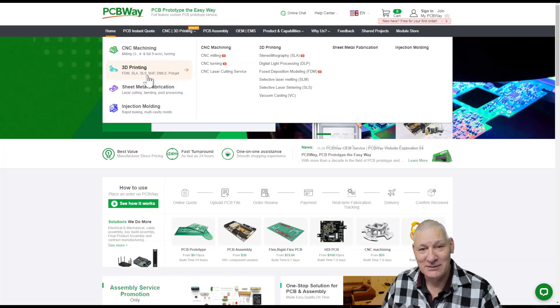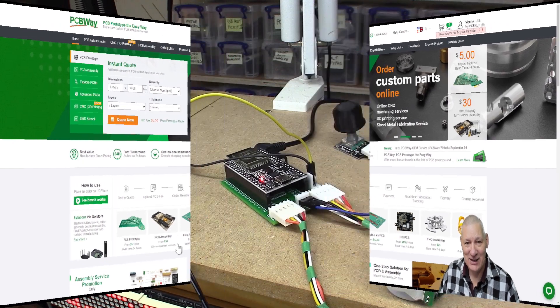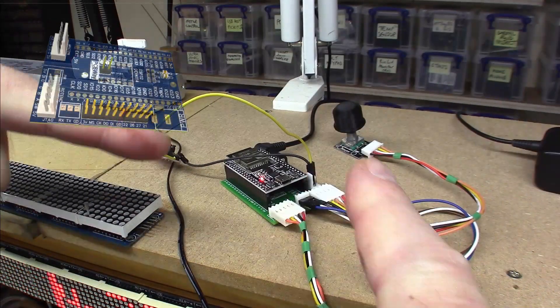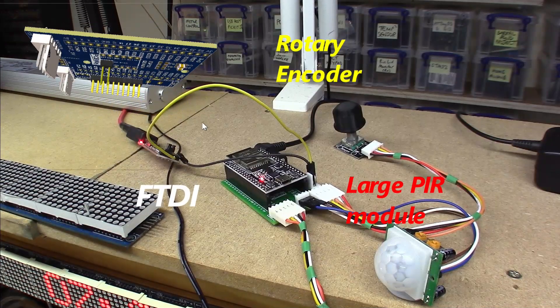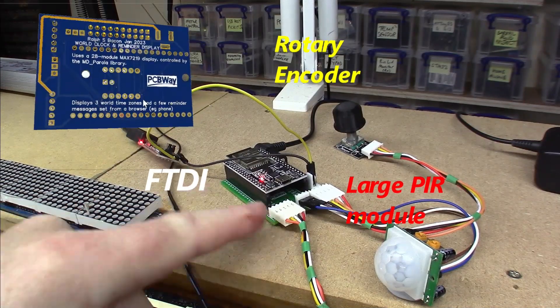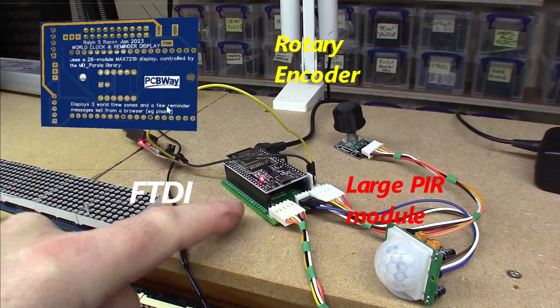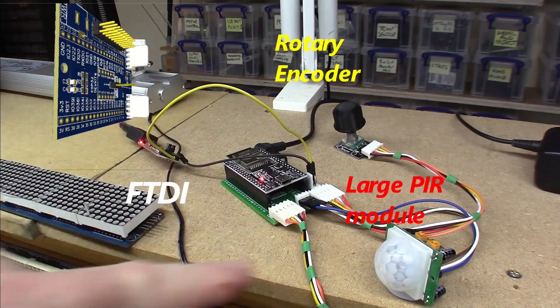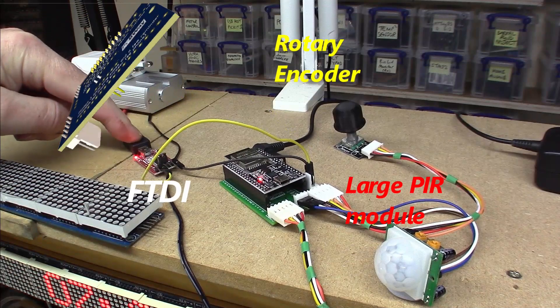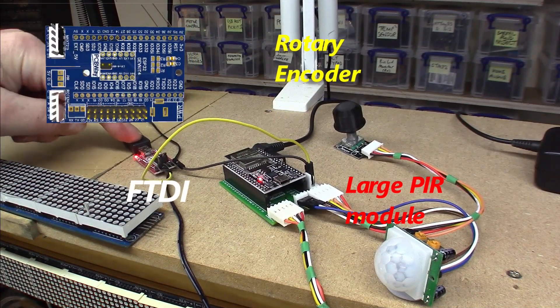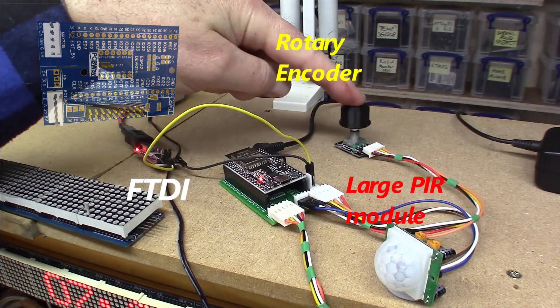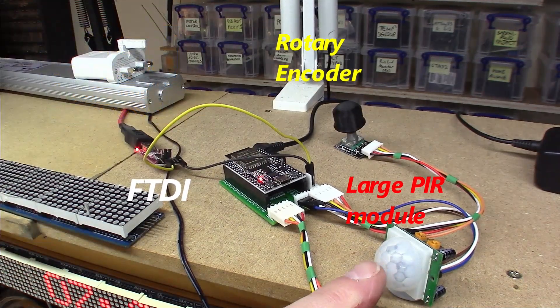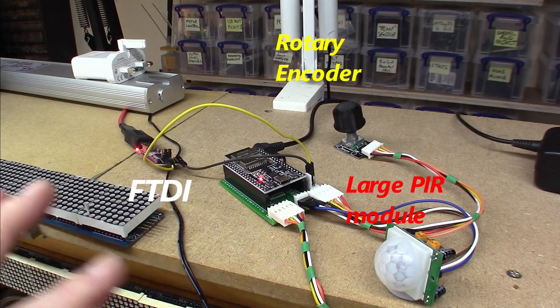What you're seeing here is the sort of final version of the project before it gets put into the case. There's the PCB from PCB Way, the processor, various connections. That's just an FTDI type USB to serial converter so I can see what's happening. That's a rotary encoder, that's a PIR so it can detect whether there's movement around here.